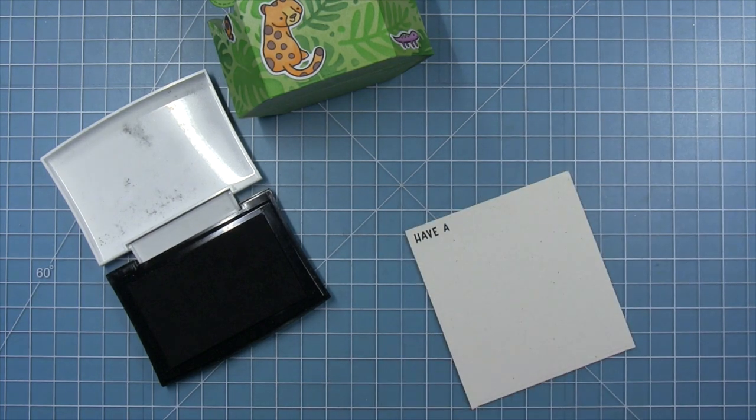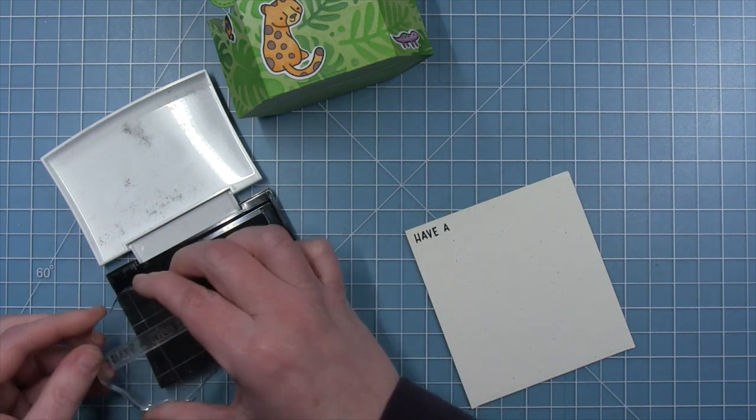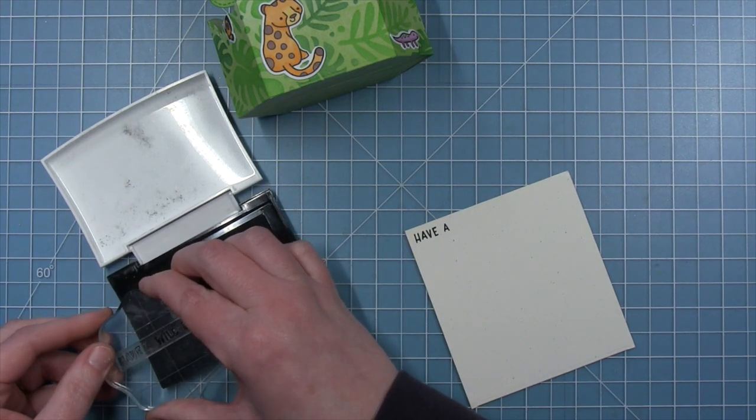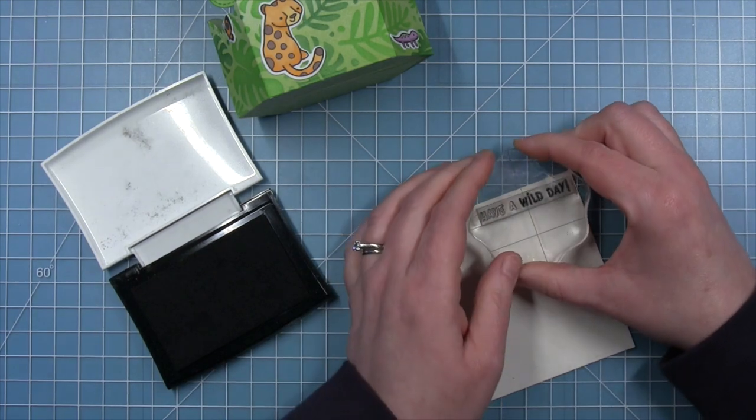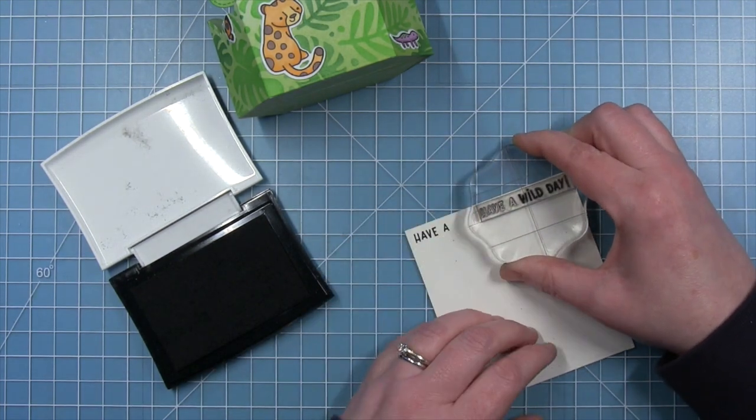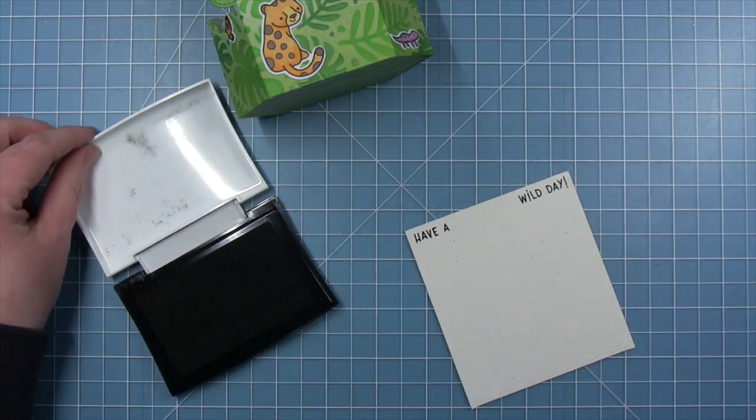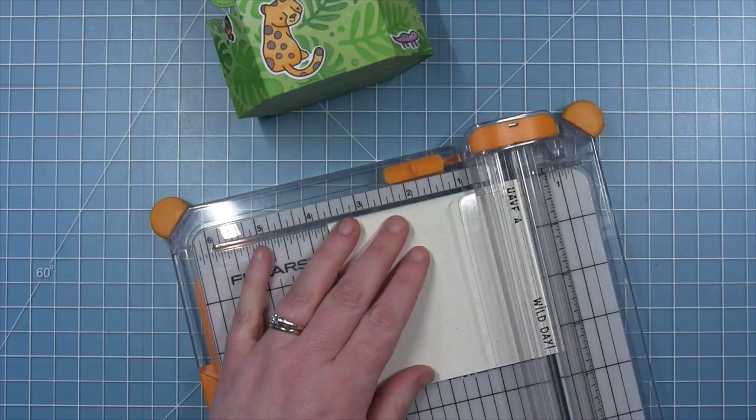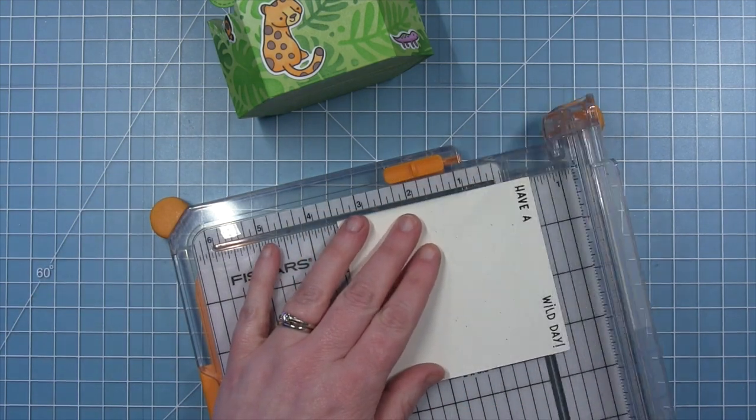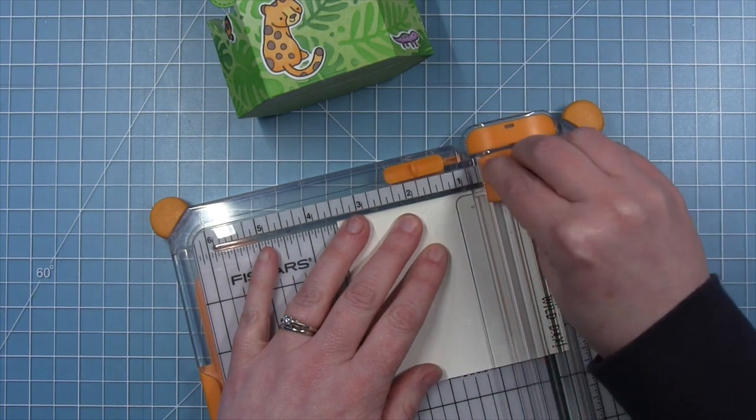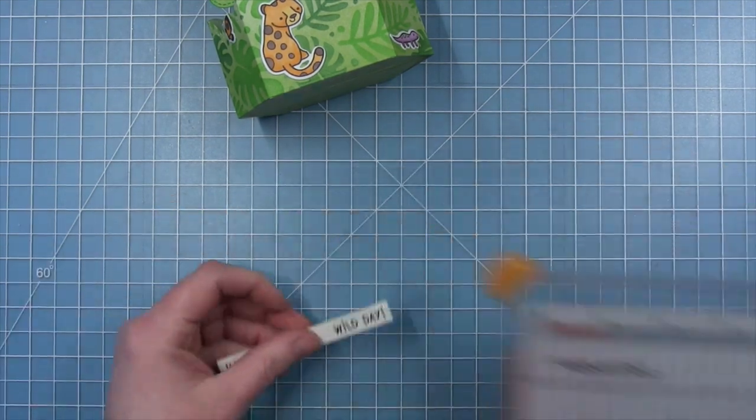I am inking it up selectively so that I have the first two words stamped separate from the last two words. And I'm just stamping them in opposite corners of this little scrap piece of speckled eggshell cardstock. And then I'm going to take my paper trimmer and trim it down into two little banners.